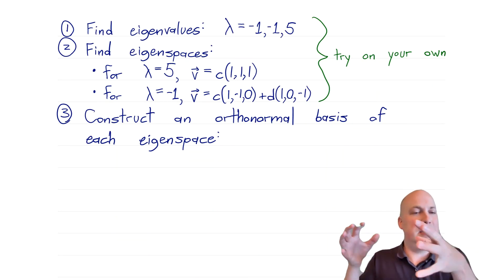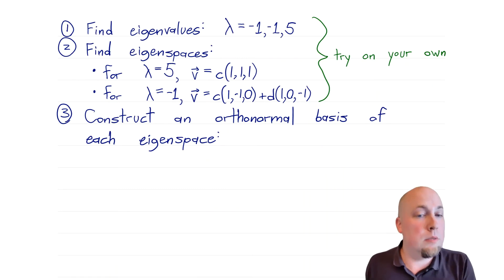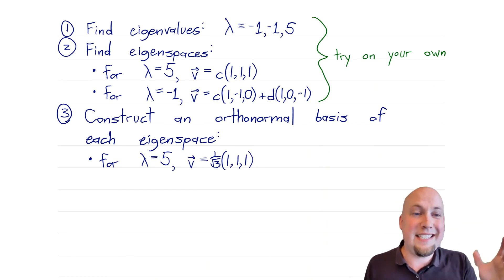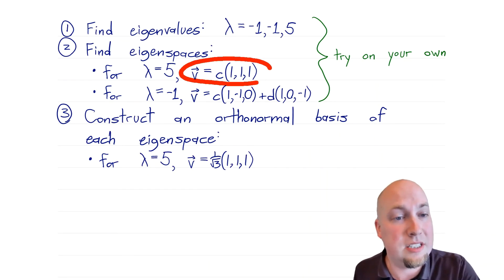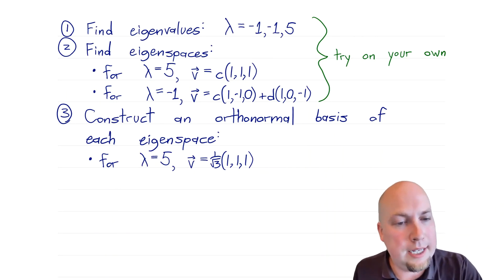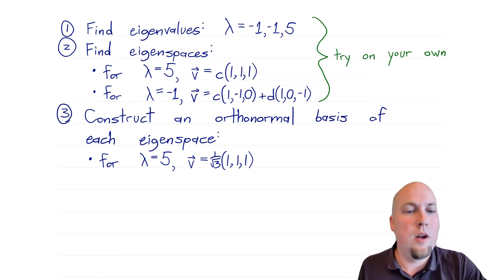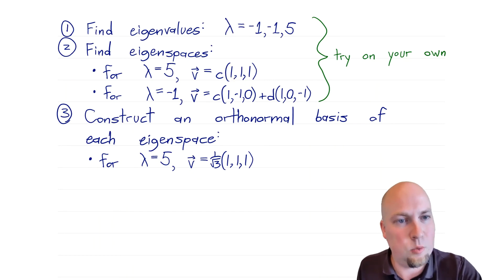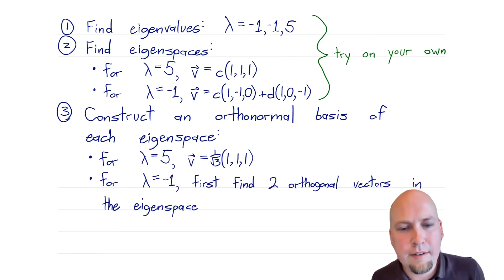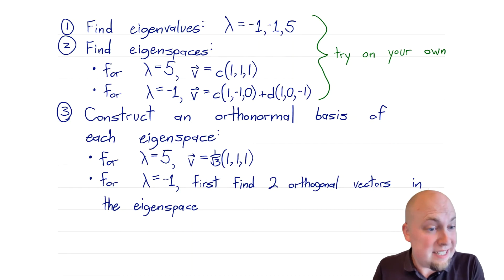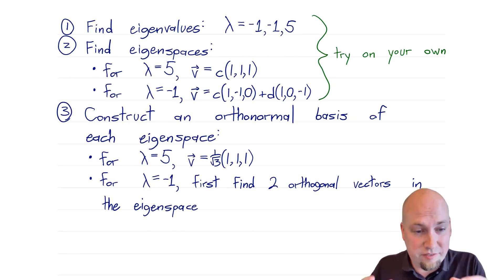But we want a spectral decomposition, meaning a unitary matrix, so we need step 3: construct orthonormal bases of the eigenspaces, not just any bases. The first eigenspace is easy since it's one-dimensional — just take the unit vector (1/√3)[1, 1, 1]. For eigenvalue λ = −1, we have to be more careful because the eigenspace is two-dimensional, so an orthonormal basis requires both a normalization step and an orthogonality requirement.